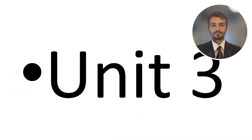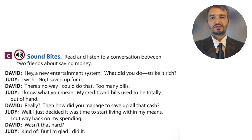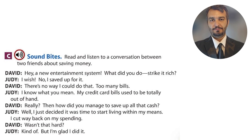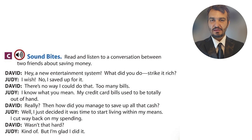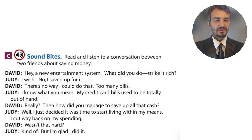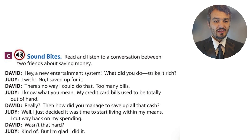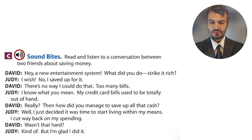Unit 3. There's a conversation between two friends about saving money. David and Judy are talking. David says: 'Hey, a new entertainment system? What did you do, strike it rich?' 'Strike it rich' is an idiom meaning to get money quickly, overnight, very soon.